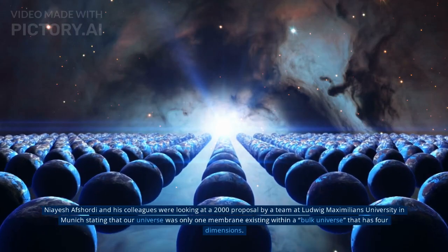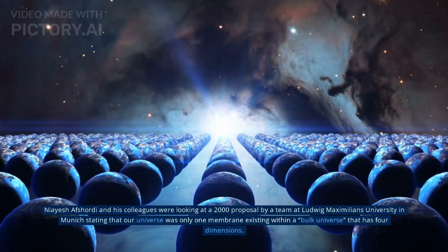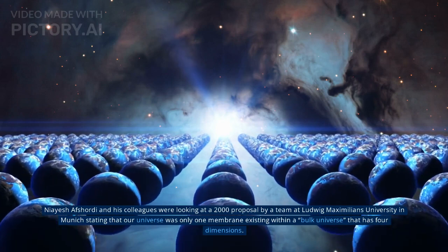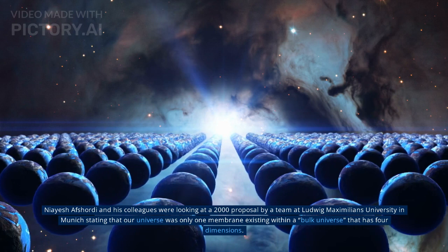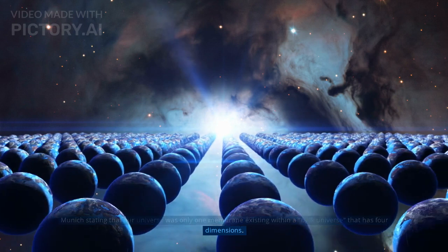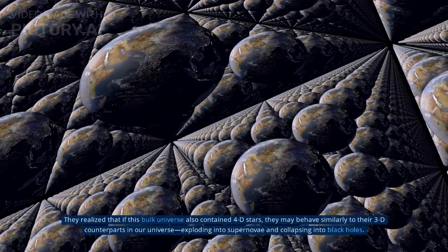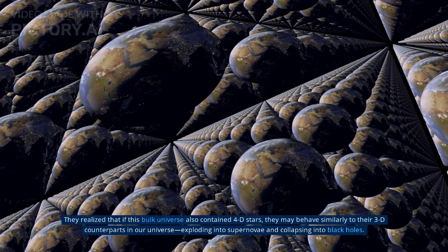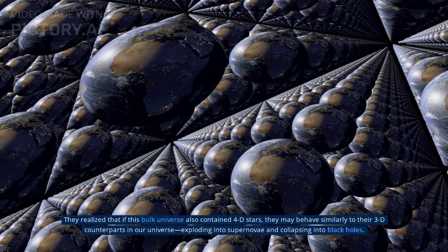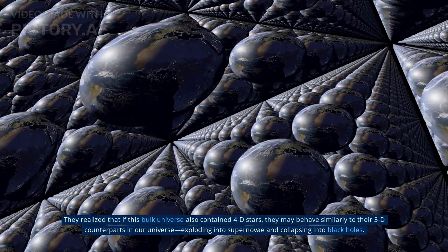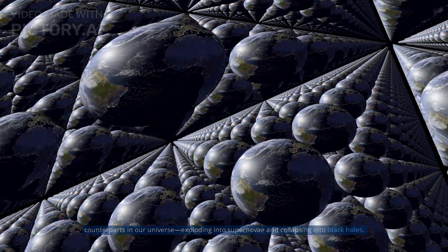Niayesh Afshordi and his colleagues were looking at a 2000 proposal by a team at Ludwig Maximilian's University in Munich, stating that our universe was only one membrane existing within a bulk universe that has four dimensions. They realized that if this bulk universe also contained 4-D stars, they may behave similarly to their 3-D counterparts in our universe, exploding into supernovae and collapsing into black holes.